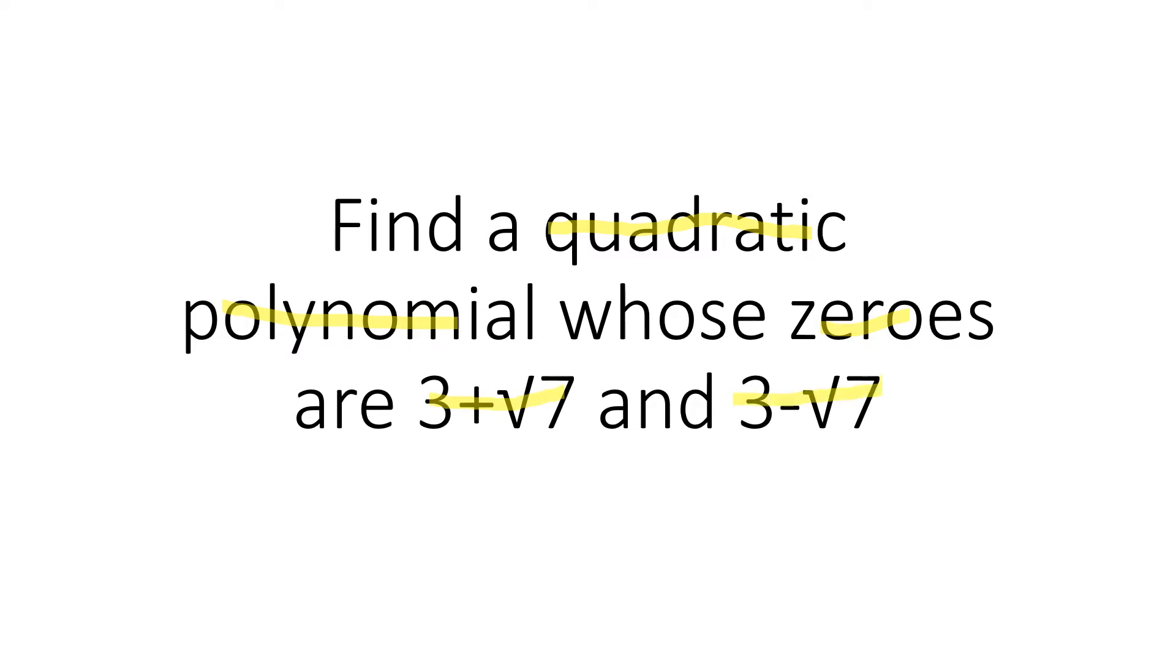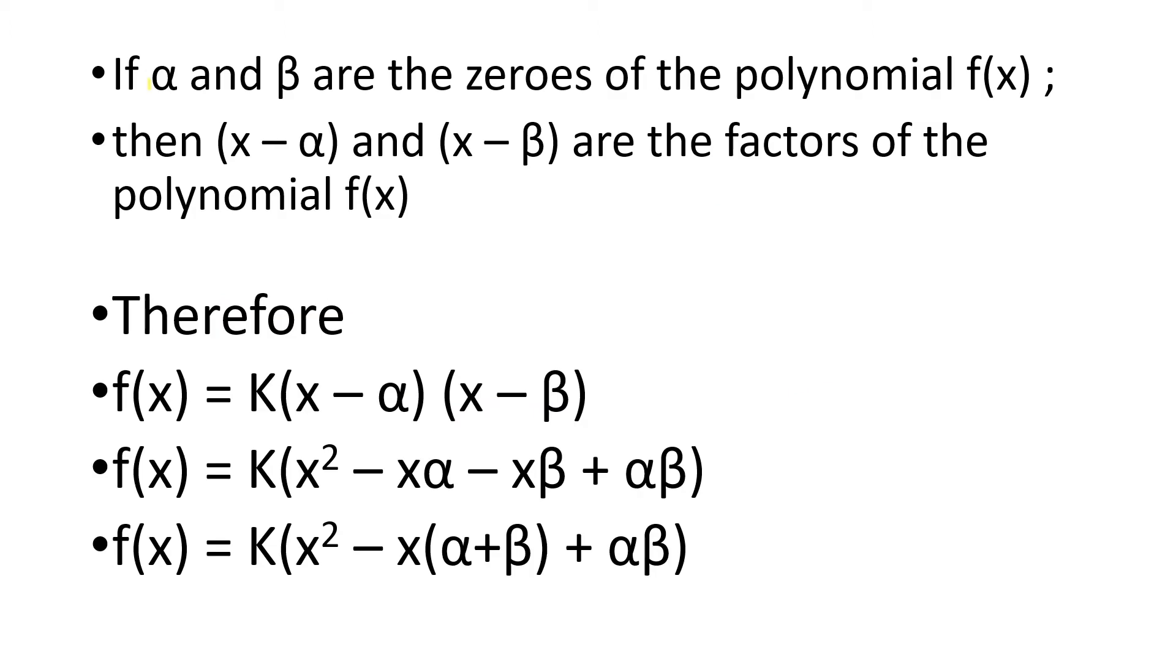Let's get started. If alpha and beta are the zeros of the polynomial f of x, then x minus alpha and x minus beta are the factors of the polynomial f of x. Therefore,